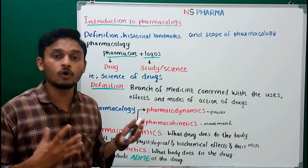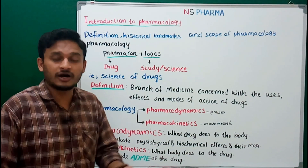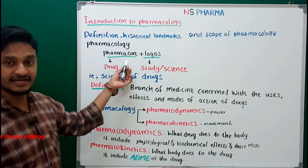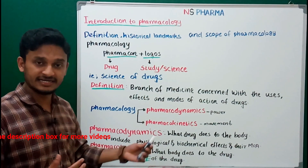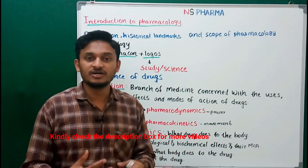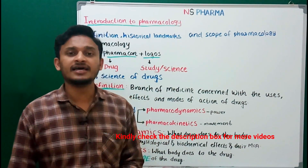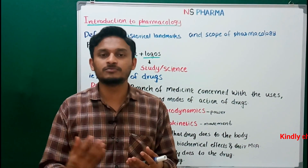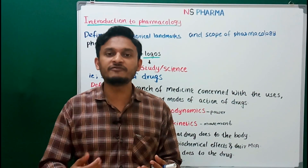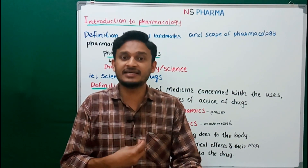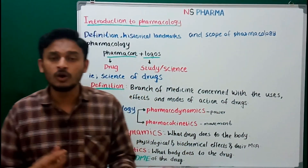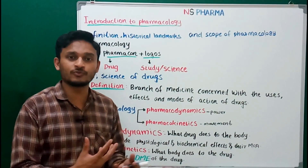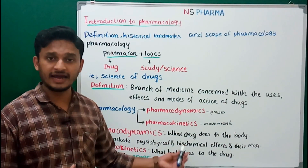The second division is pharmacokinetics. Pharmacone means drug, and kinetics means movement. So pharmacokinetics means the movement of the drug in the body — how the drug is moving in the body, whether taken orally or parenterally as an injection. How these drugs are moving, what is its pathway — that is pharmacokinetics.